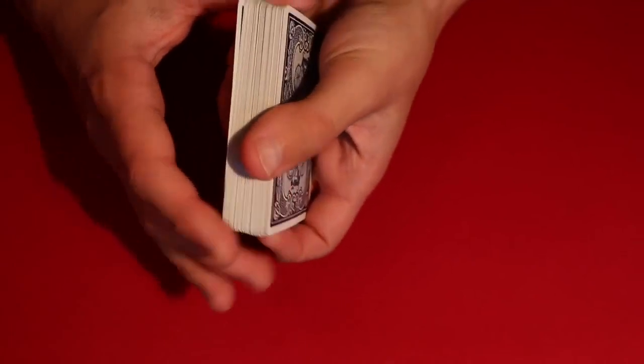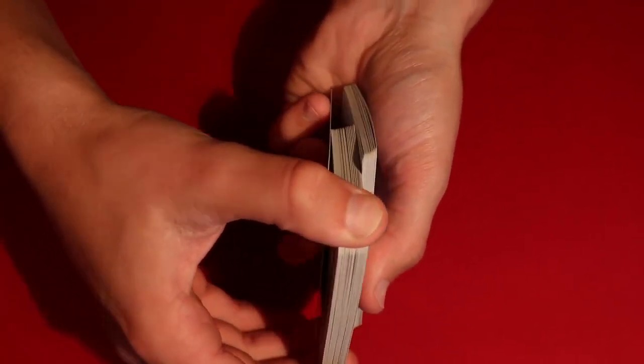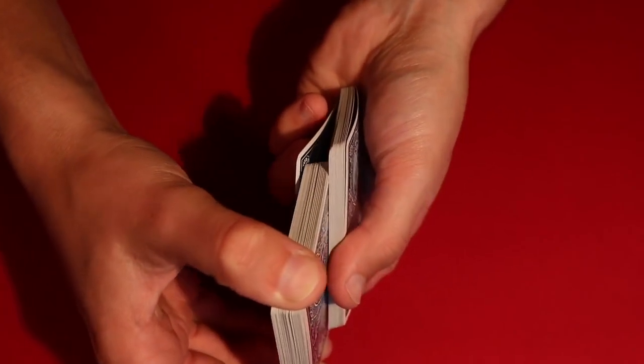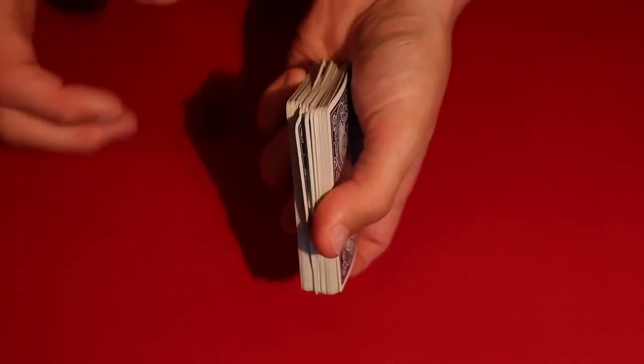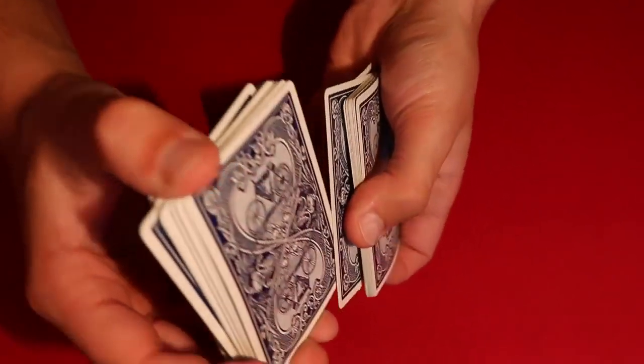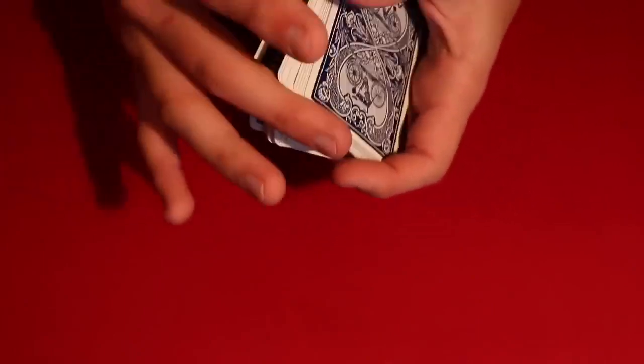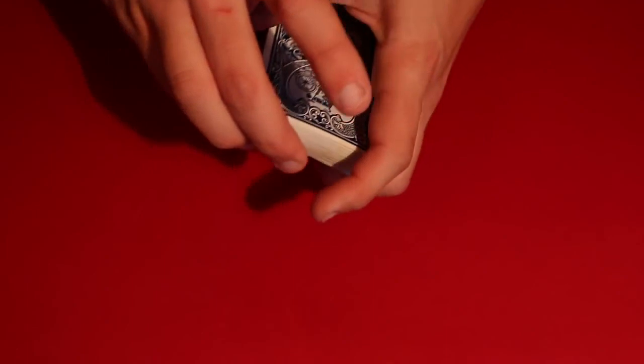So you're doing a normal overhand shuffle except for you're holding on to the bottom card right there with your three fingers. It's going to stay on the bottom and you keep doing that about three or four times. The spectators are not going to really notice you holding on to that bottom card throughout the entire shuffle. So you can do this like I said three or four times.